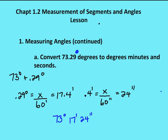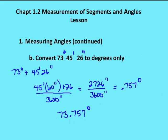The second part of the problem is to convert degrees, minutes, and seconds back to degrees only. There are a couple of different ways to do it. My suggestion is to take out the whole degrees — so I know I have 73 degrees — and focus on converting the 45 minutes and 26 seconds into a decimal portion of a degree.